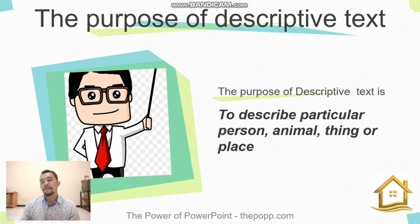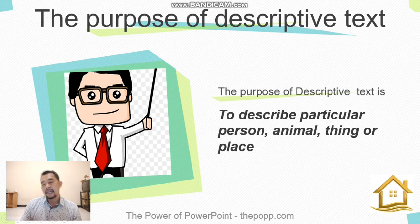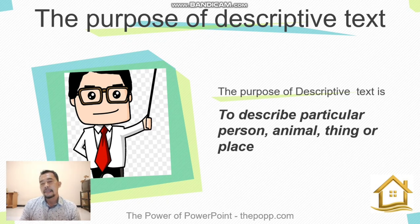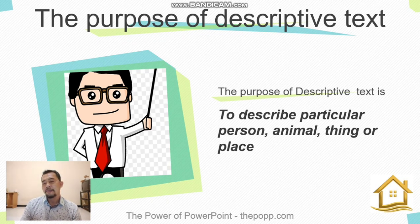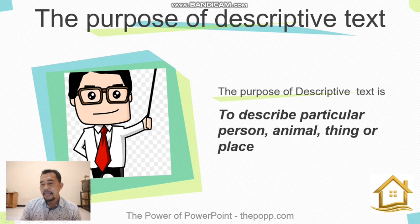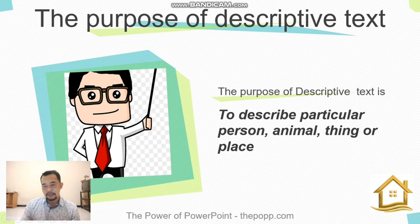'Particular' means specific, not general. For example, if we are writing about a person, the title would be 'My Friend' or 'My Best Friend' rather than just 'A Friend'. For an animal, instead of 'Cat', the title would be 'My Cat'. For a thing, it could be 'My Shoes' or 'My Bag'. For a place, it could be 'My School'. The use of 'my' shows ownership and makes the subject specific.